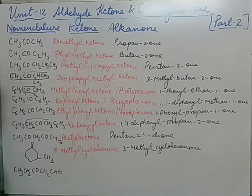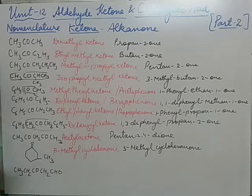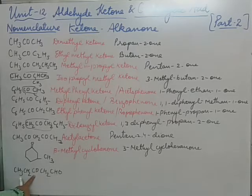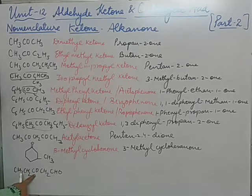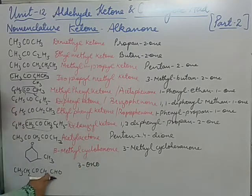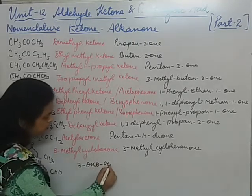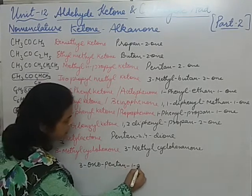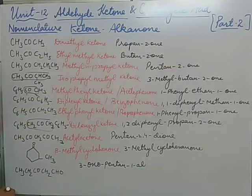Now the last one. As we studied in class 11, when we have 2 functional groups, one will be senior and another will be junior. For the senior group we use the suffix, and for the junior we use the prefix. For ketone and aldehyde groups, the aldehyde is senior — so its suffix 'al' will be used, and the prefix 'oxo' will be used for the keto group. Starting numbering from the aldehyde end: 1, 2, 3 — on the third carbon the keto group is there. With 5 carbons total, the name is 3-oxopentanal.